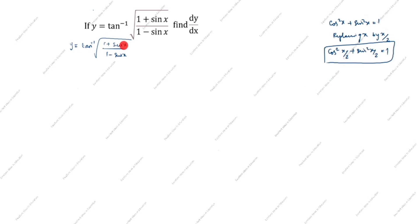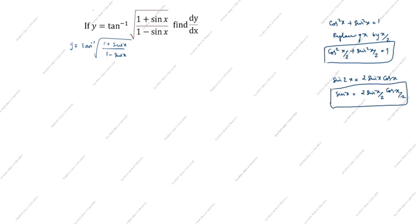Now, how will you write sine x? We know that sine 2x is equal to 2 sine x into cos x. Replacing x by x/2, sine x is equal to 2 sine(x/2) cos(x/2). We need only sine x, so this is the formula. We will write sine x equal to 2 sine(x/2) cos(x/2).